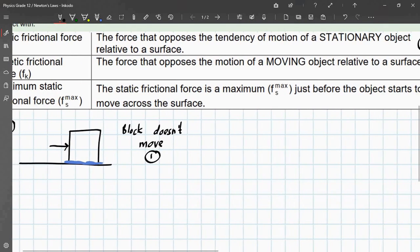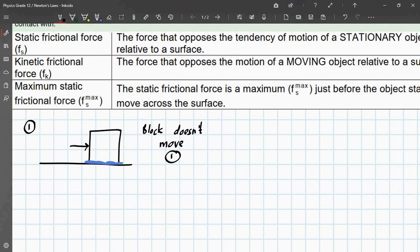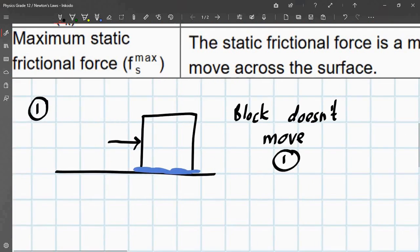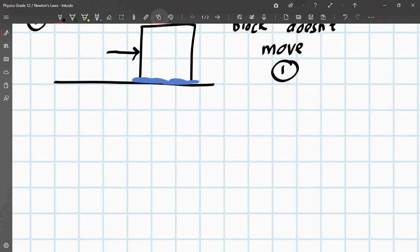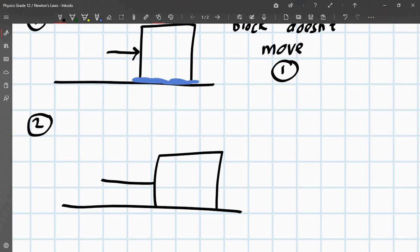Kinetic frictional force, the force that opposes the motion of a moving object relative to a surface. So, now, if we have another block, another case, maybe it can be even the same block. So, in case two, we have a block here, and a force is applied. Let's say I draw a bigger arrow, implying it's a stronger force. Same amount of friction is on the ground here. But, the block starts moving.